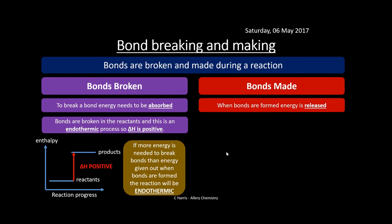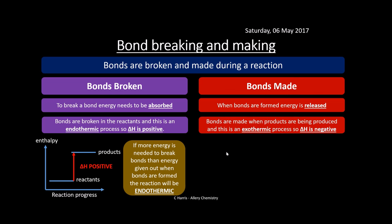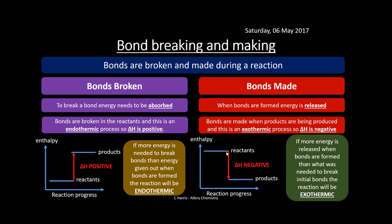When we make bonds, energy is released — this is always exothermic. Delta H is always negative for these reactions. Using the reaction profile, if we get more energy released when forming the bonds to make the products than what was needed to break the initial bonds, the reaction will always be exothermic. We can actually calculate this using data as well.